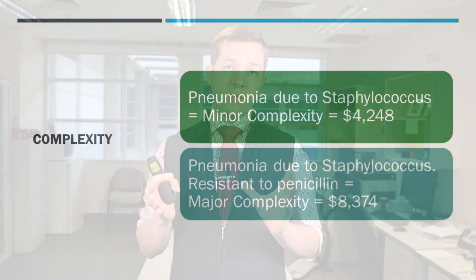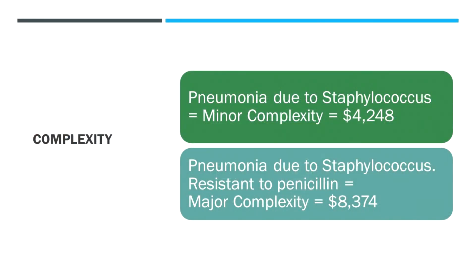Lastly, Staphylococcal pneumonia is pretty severe. If you just say 'pneumonia due to Staphylococcus,' that is minor complexity at $4,250. But if you state that it's pneumonia due to Staphylococcus resistant to penicillin — because we know it's MSSA, resistant to standard penicillins — just mentioning that proven resistance pattern gives it major complexity and doubles the income in that instance. A lot of the time this is the case, but we're missing out on that coding and being underfunded for these encounters.